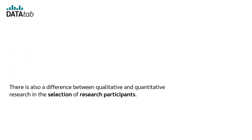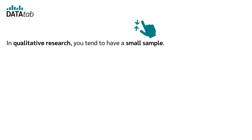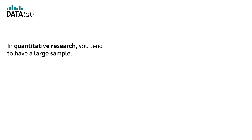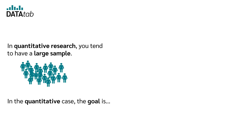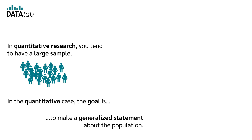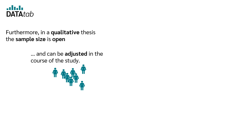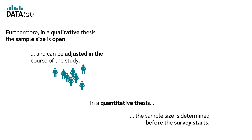There is also a difference in the selection of research participants. In qualitative research, you tend to have a small sample — few individuals are studied and the goal is to look very closely at each individual subject. In quantitative research, you tend to have a large sample, and the goal is to make a generalized statement about the population. Furthermore, in a qualitative thesis the sample size is open and can be adjusted during the study, while in a quantitative thesis the sample size is determined before the study starts.